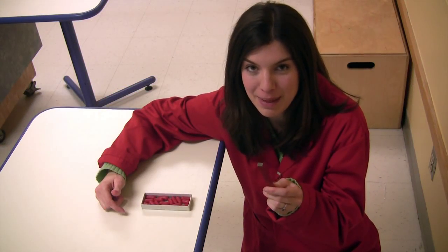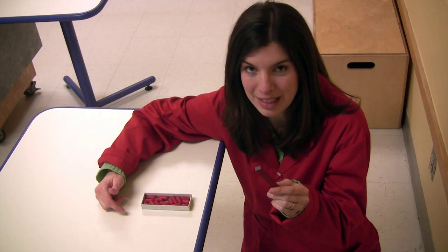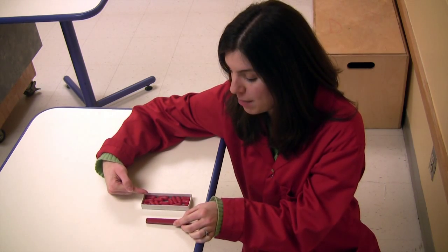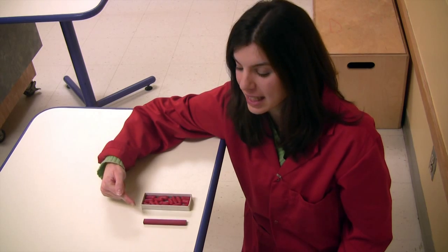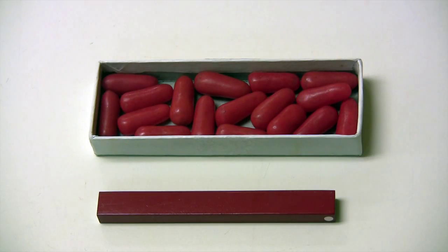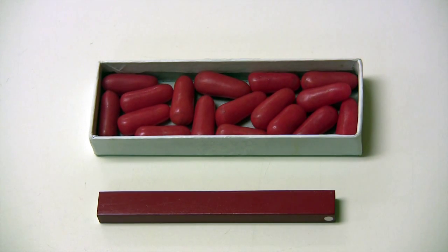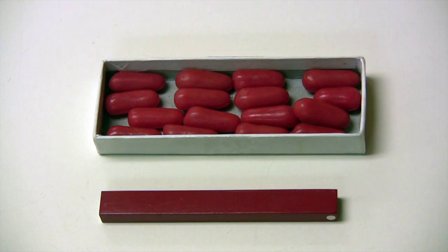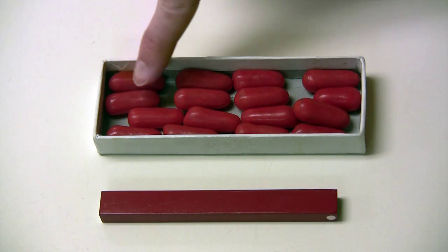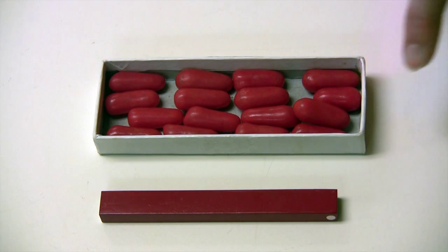The atoms of these metals form clusters called domains. Imagine that these candy pieces are the domains inside this metal bar. When the domains are not aligned like this, the metal is not magnetized. It is only when most of the domains are aligned in the same direction that the metal becomes a magnet.